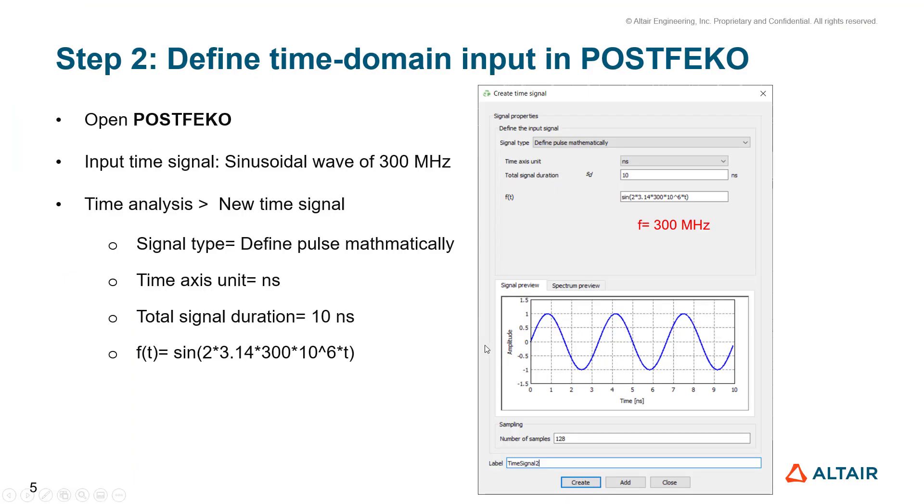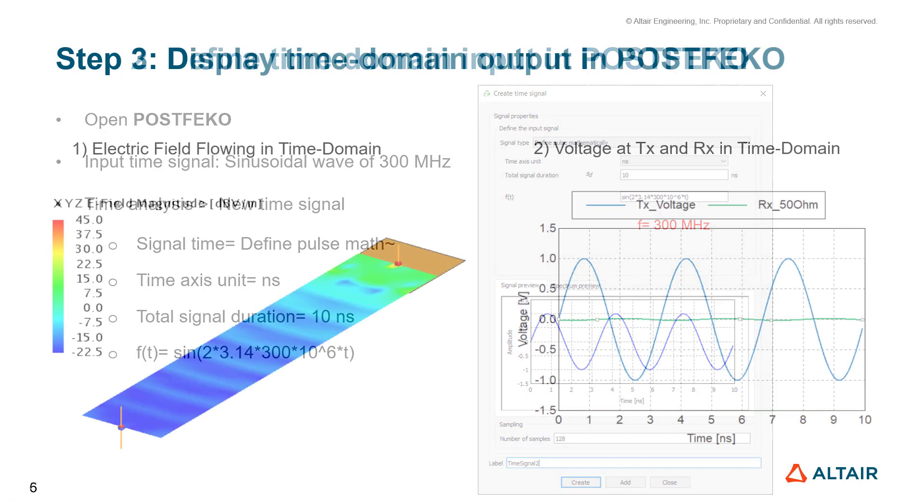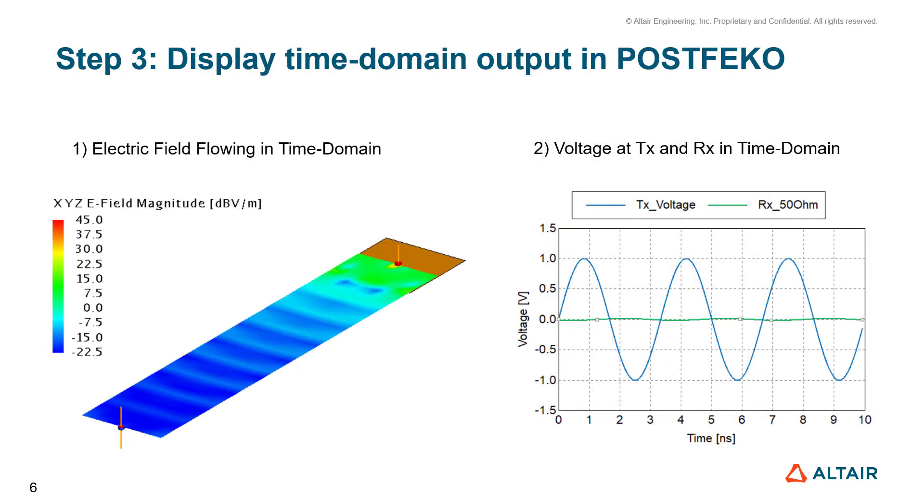After defining time domain input in POSTFEKO, then the third step is to display time domain output in POSTFEKO. So here you can see electric field flowing in time domain and voltage at TX and RX in time domain.